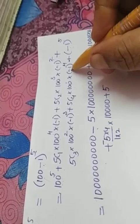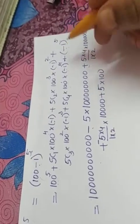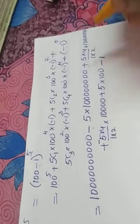Plus 5c4 is the same as 5c1 which is 5. This is positive because minus 1 raised to 4 is positive. 5 into 100 and here the last term minus 1 raised to 5 gives you negative 1.